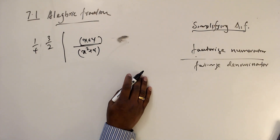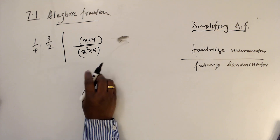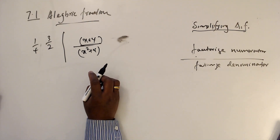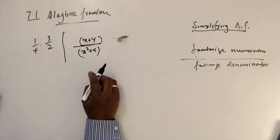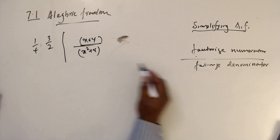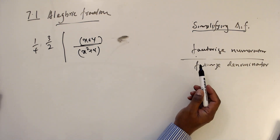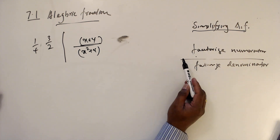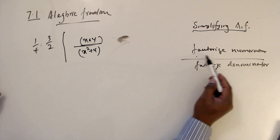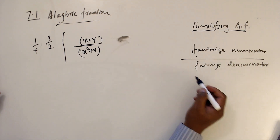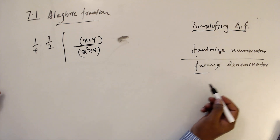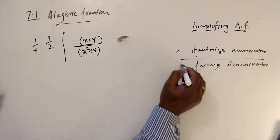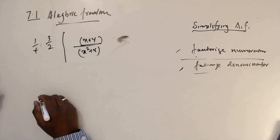So how do we simplify an algebraic fraction? We can simplify an algebraic fraction by factorizing the numerator and the denominator, then cancelling the common factors out.